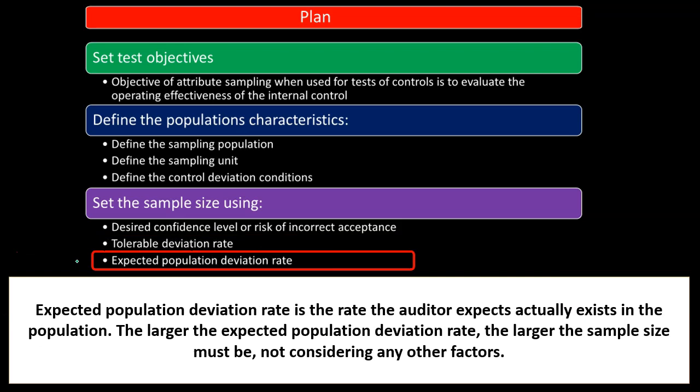The expected population deviation rate is the rate the auditor expects actually exists in the population. The larger the expected population deviation — the deviation from what we're testing — the larger the sample size must be. So if we consider there's going to be a larger deviation, we would want to increase the sample size, because there's going to be more risk.